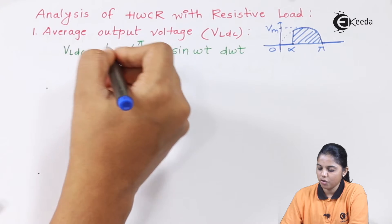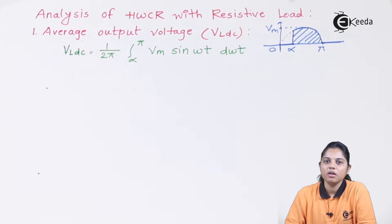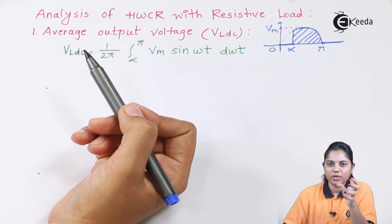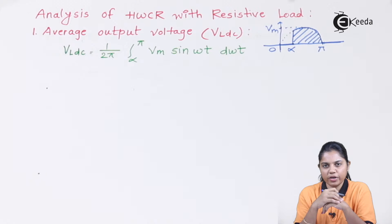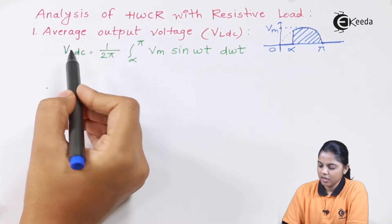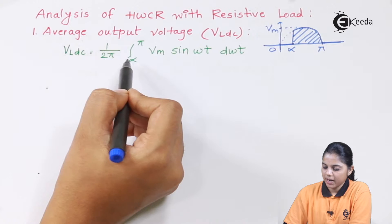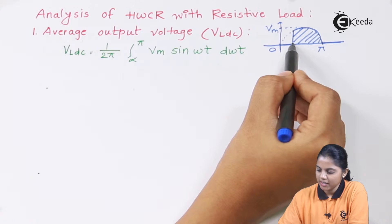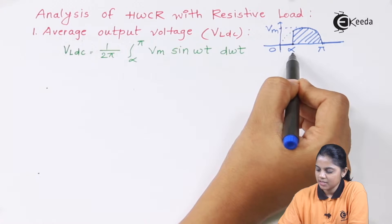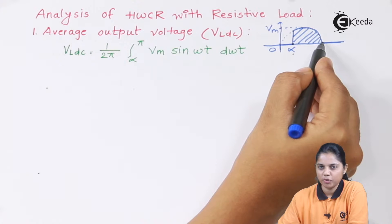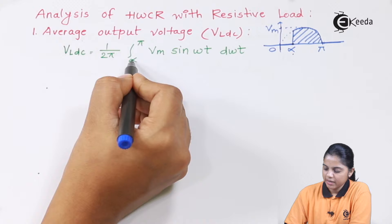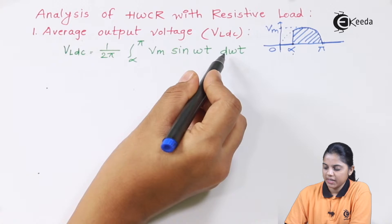First we are going to analyze for the average output voltage that is VLDC, then we are going to go for VL RMS, that is the root mean square load voltage. This can be analyzed by using the Fourier transform. So I have written VLDC is equal to 1 by 2pi, integrated from alpha to pi, where the output voltage waveform starts from the firing angle alpha till pi. That shaded area is nothing but the output voltage. So it is 1 by 2pi, alpha to pi, Vm sin(ωt) d(ωt).